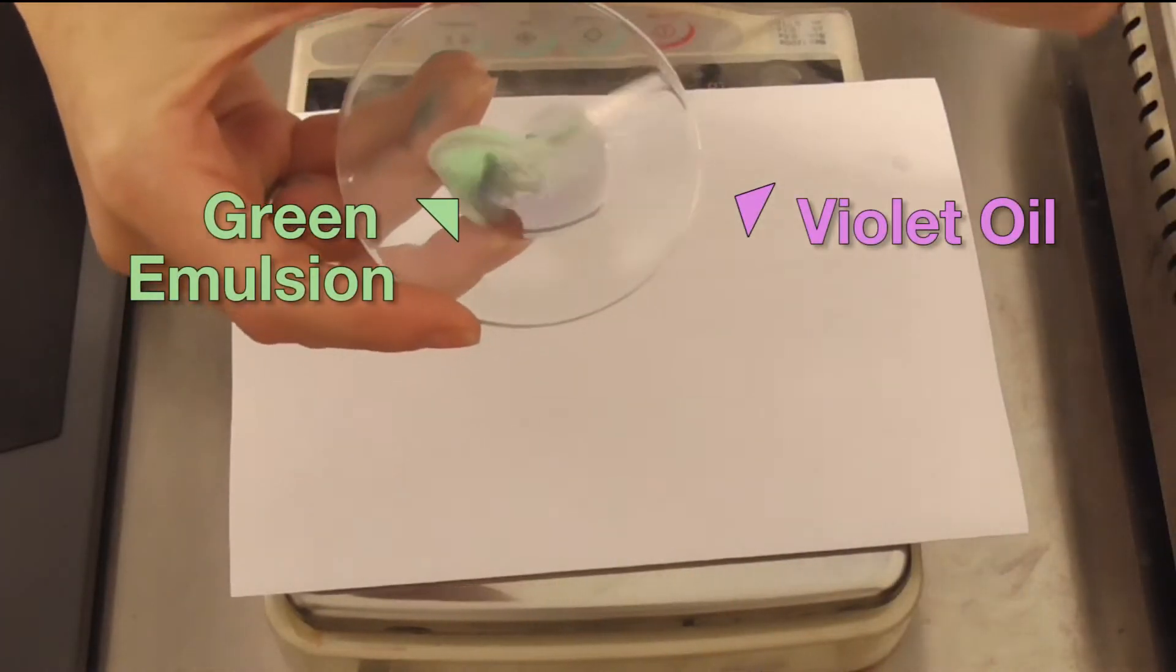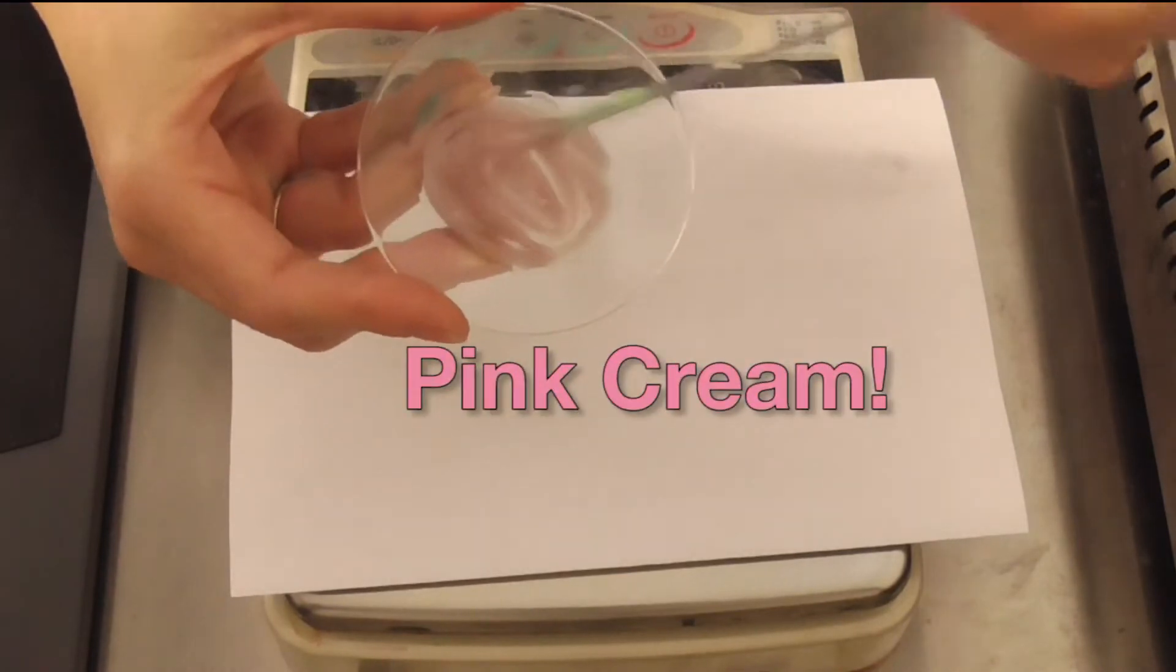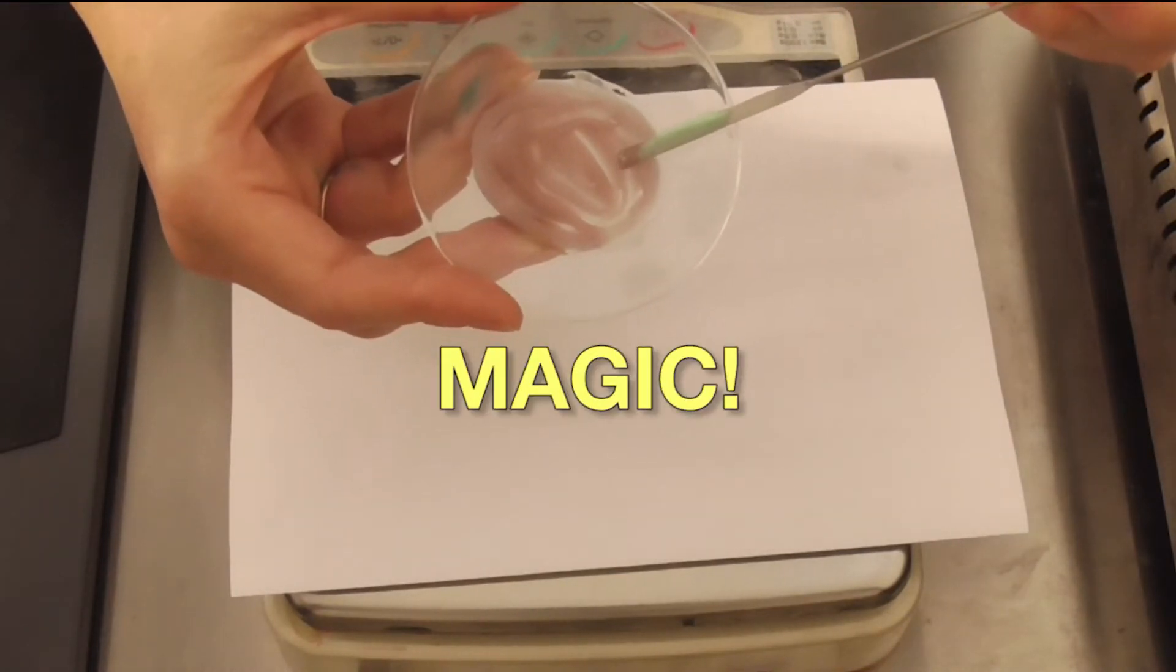I'm going to show you how to turn a violet oil and a green cream into a pink emulsion. Don't think it can be done? Just watch this. And look, it's turned pink.